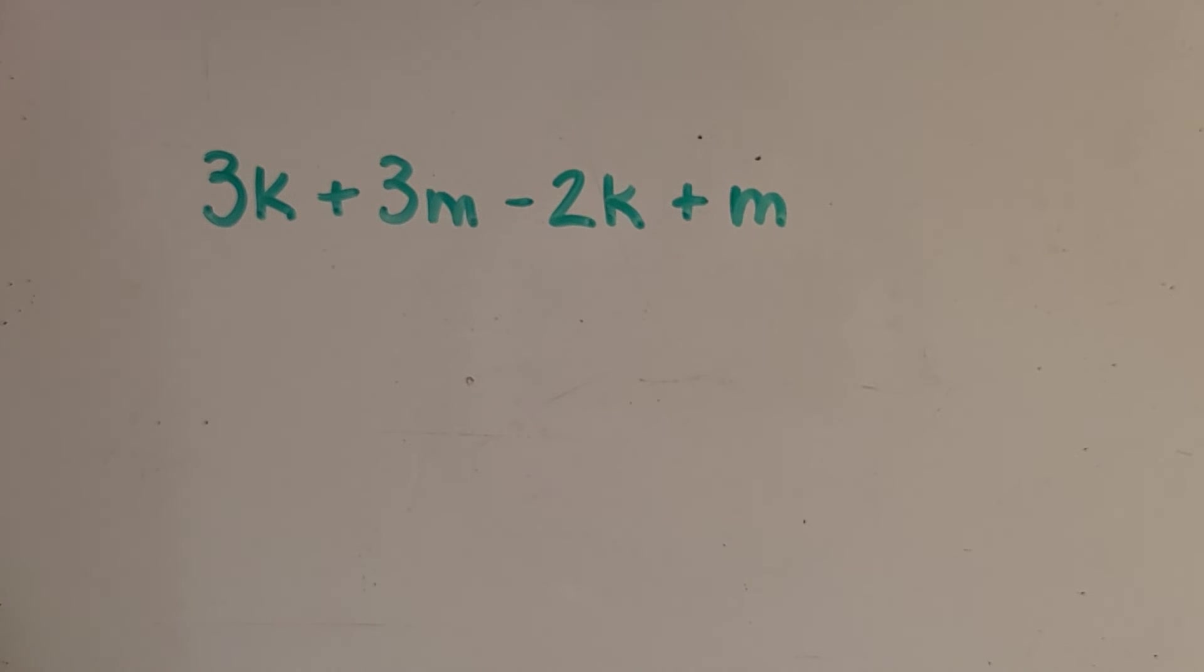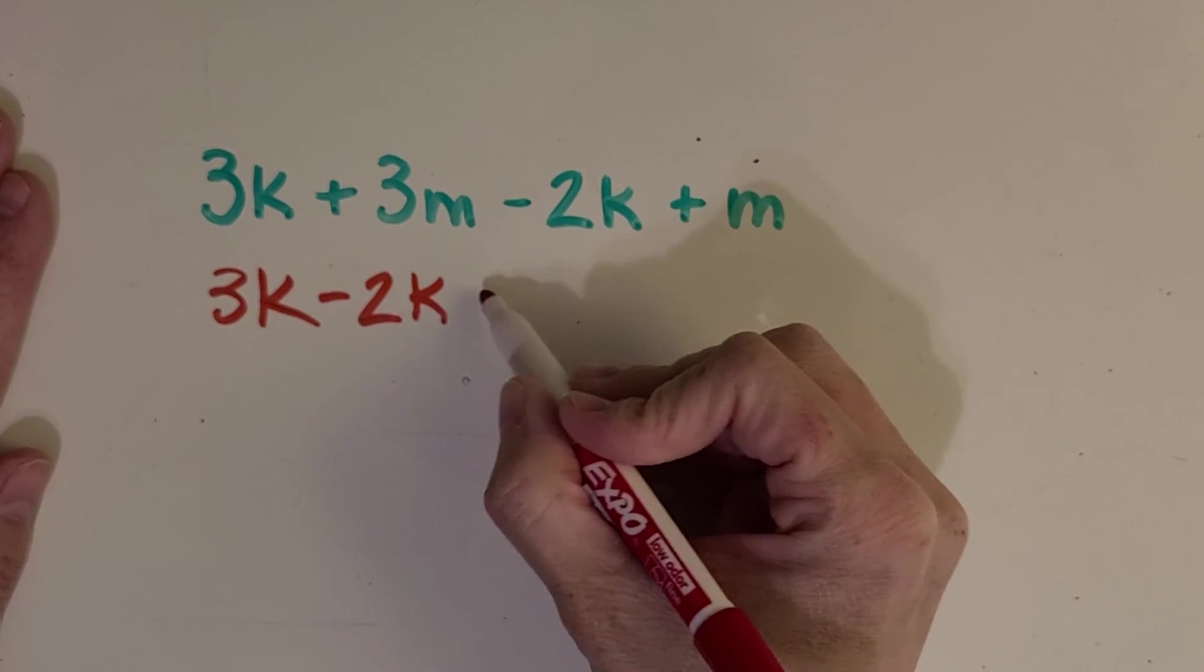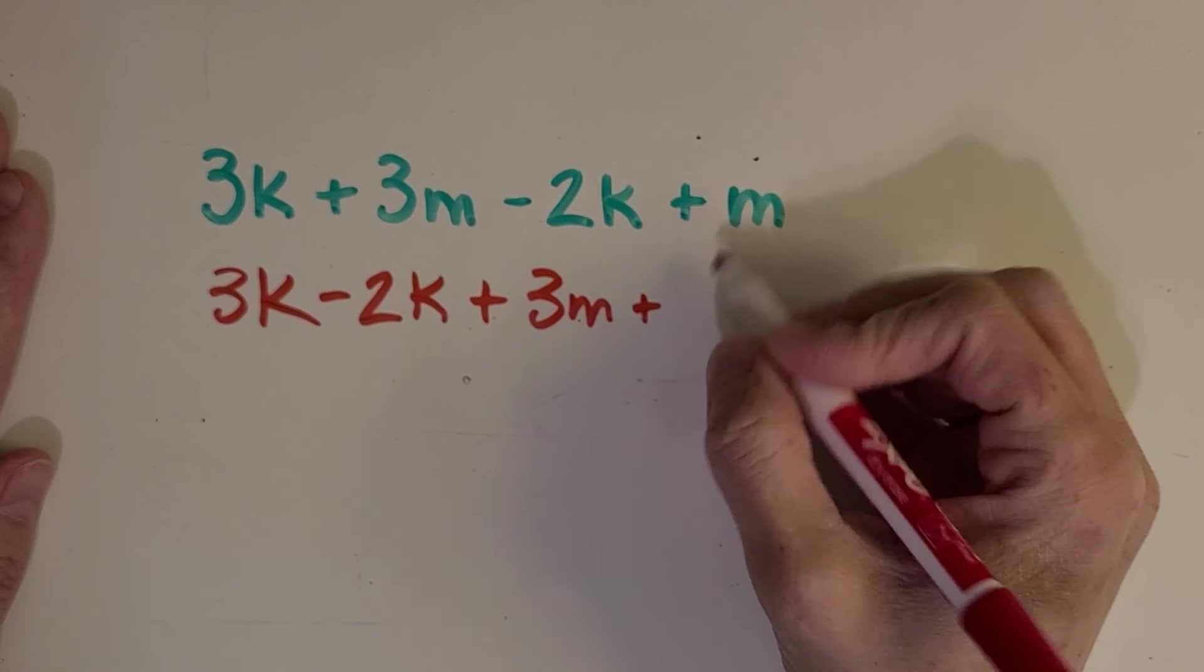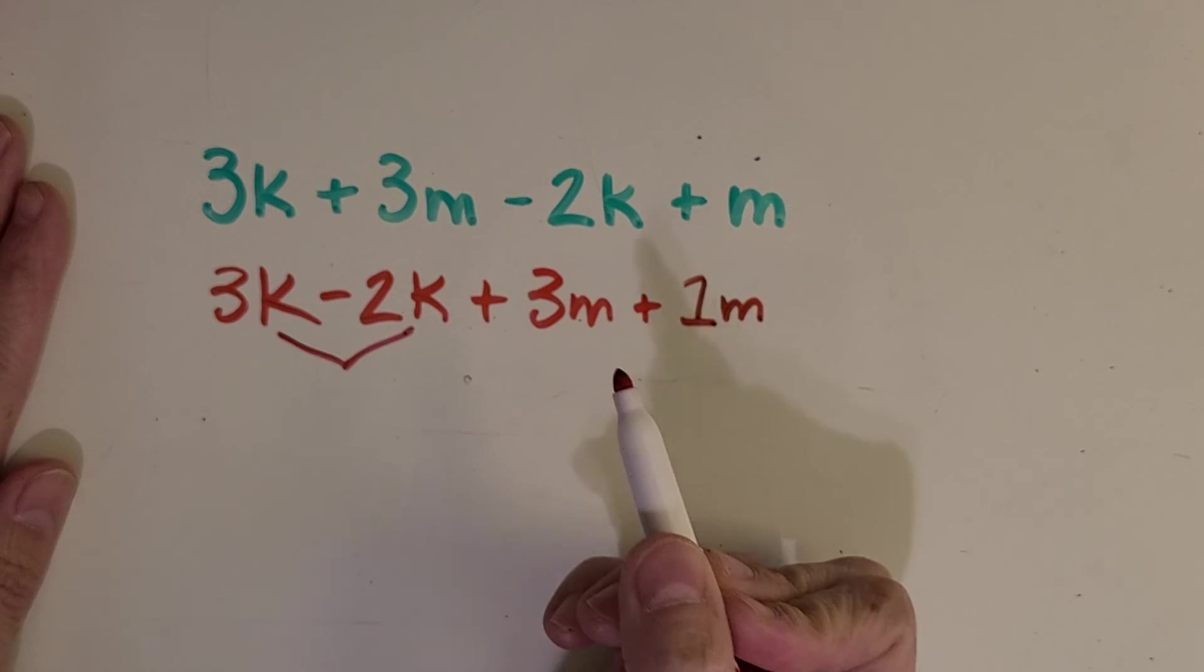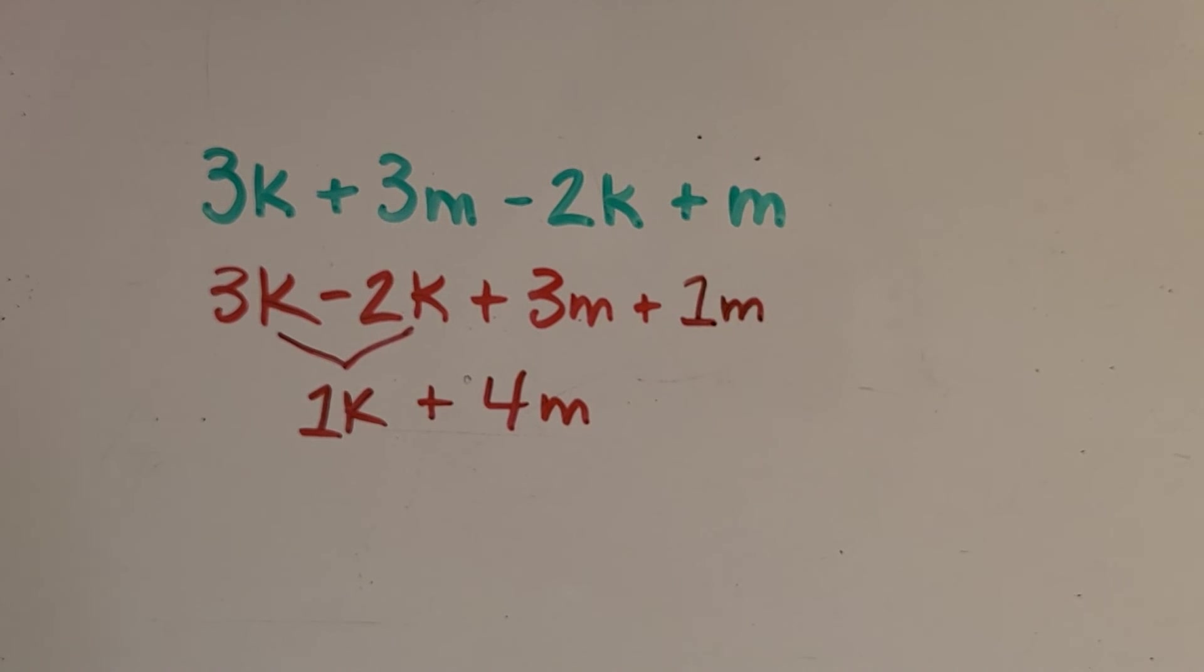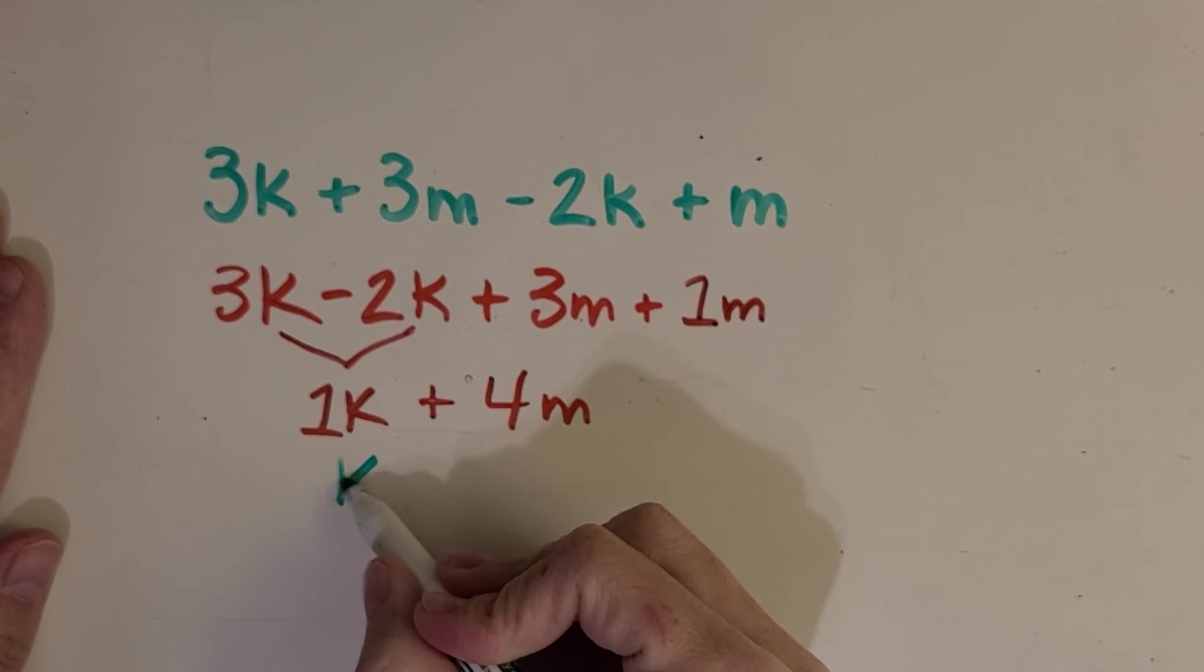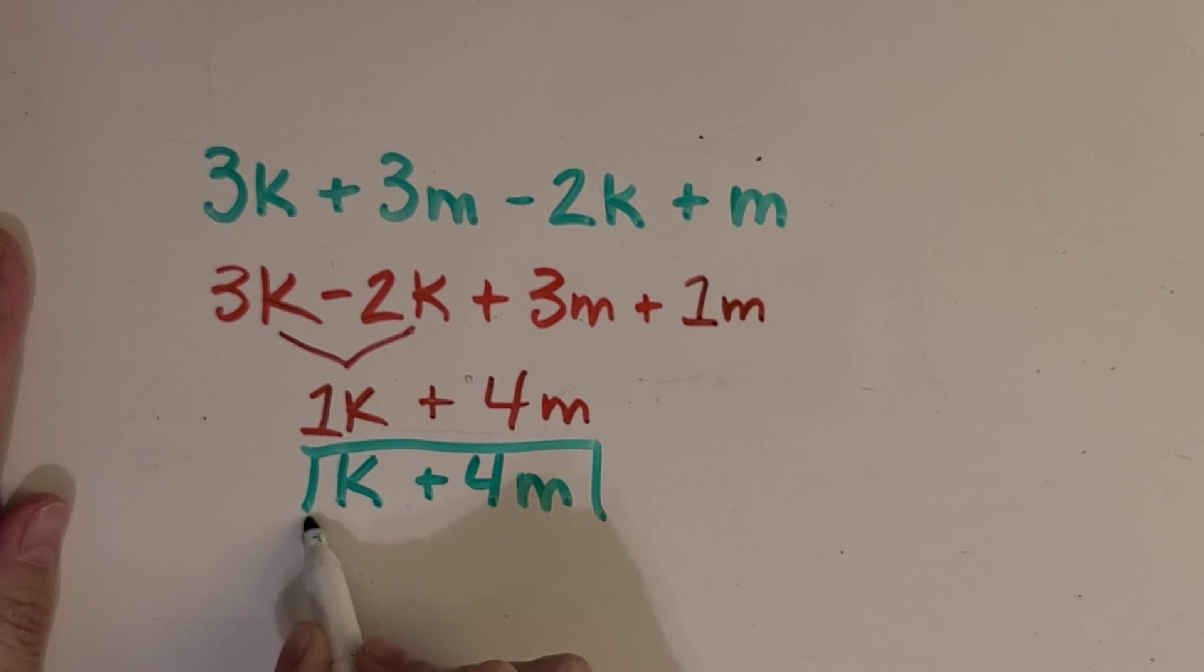All right, here's another example. I want you to pause the video, see if you can simplify this expression. All right, let's check your work. I'm going to rearrange things first, get this other K next to it, then the M's, plus I might even make it a coefficient there so I remember what that means. Okay, then I can start. This is just one K plus four M. And to simplify it even further, I don't need that one, remember, so I can just call it K because that is one of those, plus four M. All right, there it is simplified, it's simplest form.